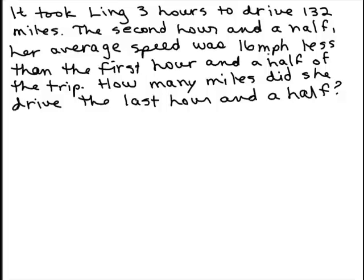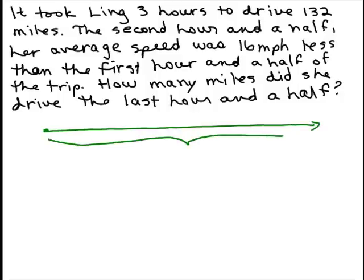So what's the picture here? We know that Ling drove 132 miles, so here she goes. She drives 132 miles, so we know that's a total of 132 miles. But we know that her speed changed after an hour and a half, and in fact it was less the second hour and a half. So she was going faster at the beginning, so maybe the first hour and a half she only got this far.